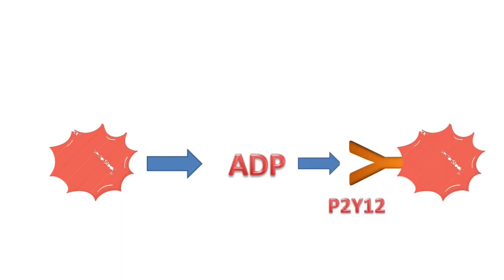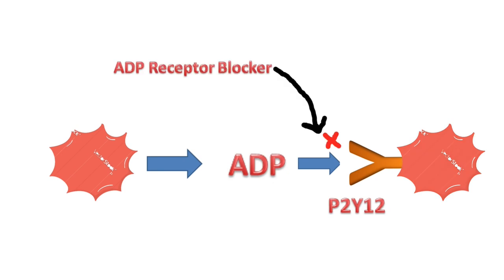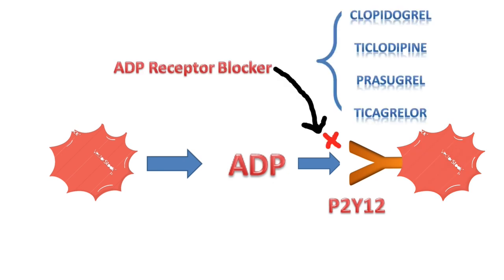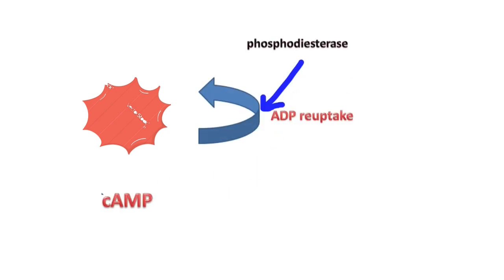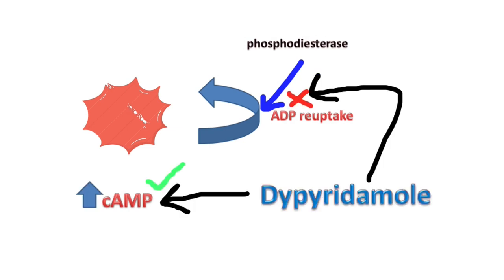In another process, the dense granules secrete ADP, which attaches to the P2Y12 receptors on other platelets, activating them. The drugs which inhibit these P2Y12 receptors are the ADP receptor blockers: clopidogrel, ticlopidine, prasugrel, and ticagrelor. There is also dipyridamole, which inhibits ADP reuptake by blocking the phosphodiesterase enzyme and increasing cAMP concentration.